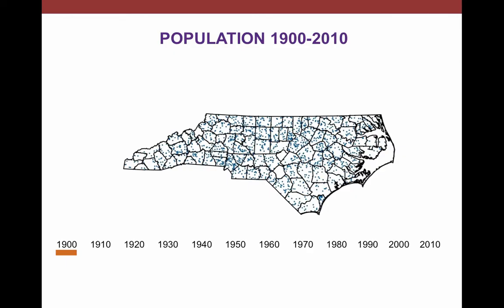Let's begin by reviewing the spatial distribution of the state's population — how people are spread out across the state. We're going to see how this has changed over time and where we are today.